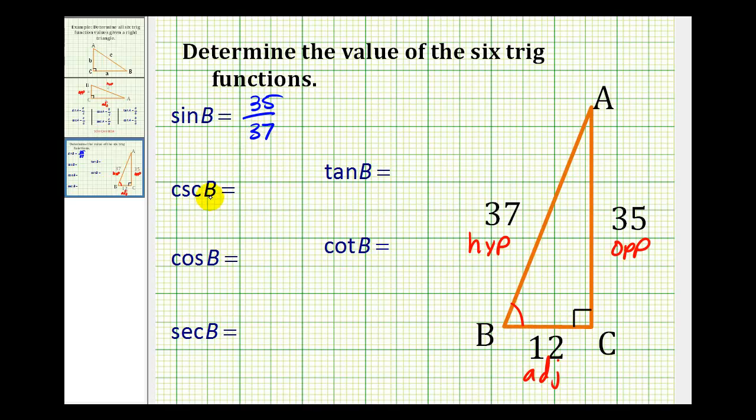Now, the cosecant of angle B would be the reciprocal of the sine of angle B, so the cosecant of angle B would be 37/35.